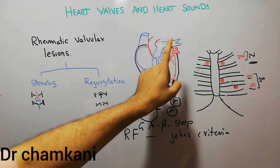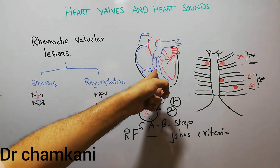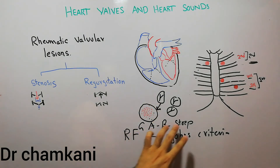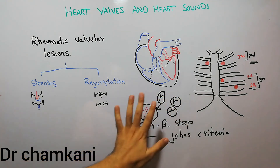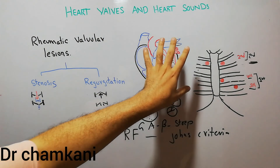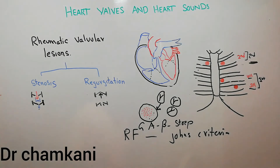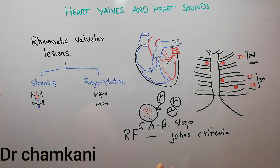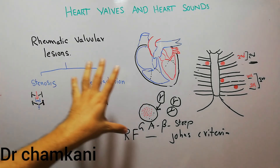Stenosis and regurgitation can occur in the mitral valve, the aortic valve, the tricuspid valve, and the pulmonary valve. But in rheumatic fever, the most common valve involved is the mitral valve. The pathology is that due to infection by group A beta-hemolytic streptococci, antibody formation occurs, and those antibodies not only react against the bacteria but also act against different parts of the human body, including the valves, leading to either stenosis or regurgitation. In the pathology section, we will discuss the Jones criteria and treatment and prevention of rheumatic fever in detail.